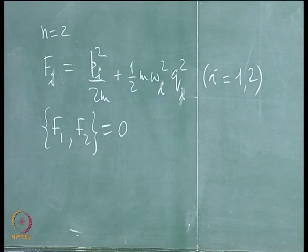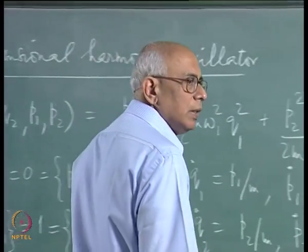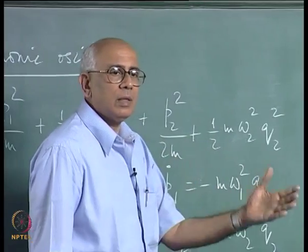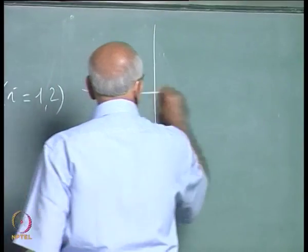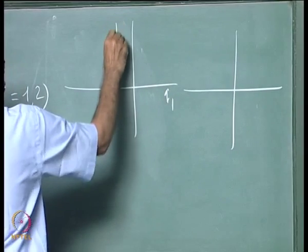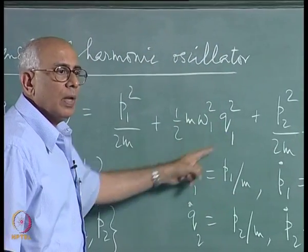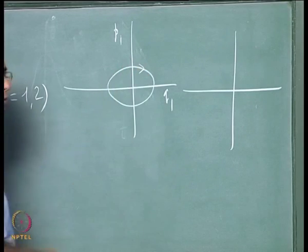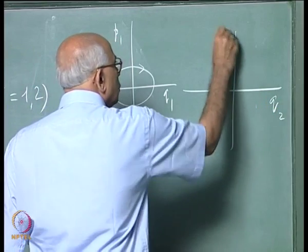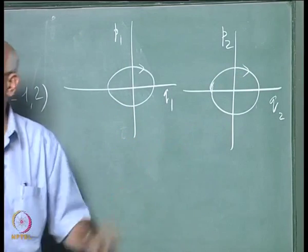Now we ask what other constants of motion the system could have. The phase trajectories cannot be drawn since it requires four-dimensional space, but we can draw projections. In the q1, p1 plane, since F1 is constant, the projections are ellipses. Similarly in the q2, p2 space we get ellipses, with periodicities 2π/ω1 and 2π/ω2 respectively.